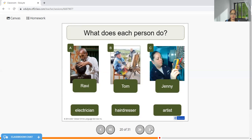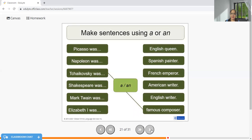Ravi is a hairdresser. Tom is an artist - yes, you are right, Tom is an artist. Jenny is an electrician - vowel, so I'm using 'an'. Let's match these together. Picasso was a famous painter, he was a Spanish painter. Napoleon was a French emperor. Shakespeare was an English writer. Elizabeth was an English queen. I'm sure you have heard about these names, so I'm just matching their professions with each other. My focus is where I need to use 'a', where I need to use 'an'.